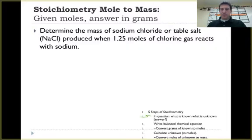In the question it says, what is the known and what is the unknown? The known is the one thing that's given to us to help us start solving this, and that would be our 1.25 moles of chlorine gas. One thing to remember is chlorine is a diatomic, so it's going to be Cl2.